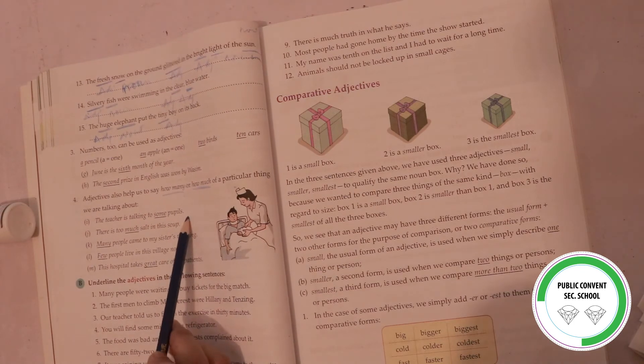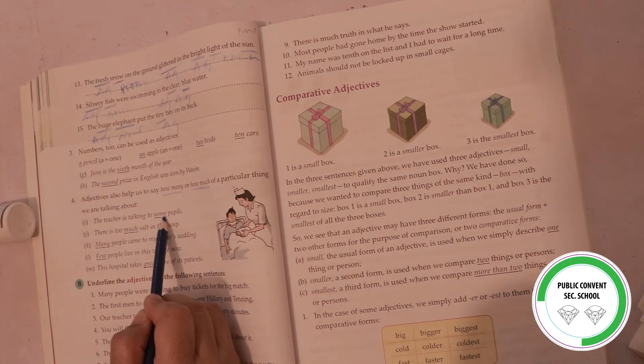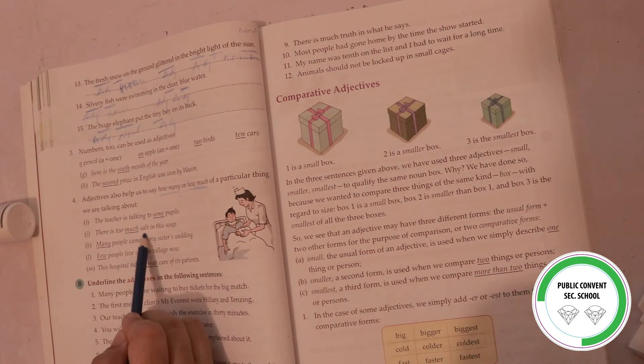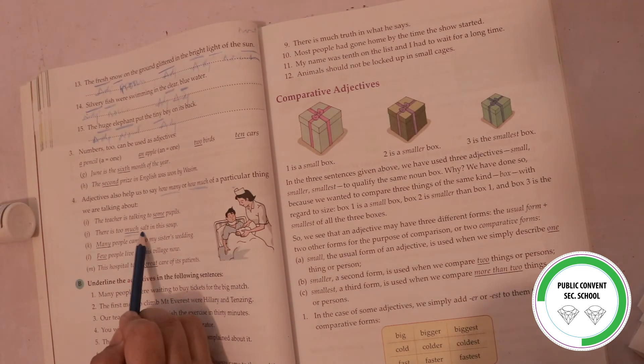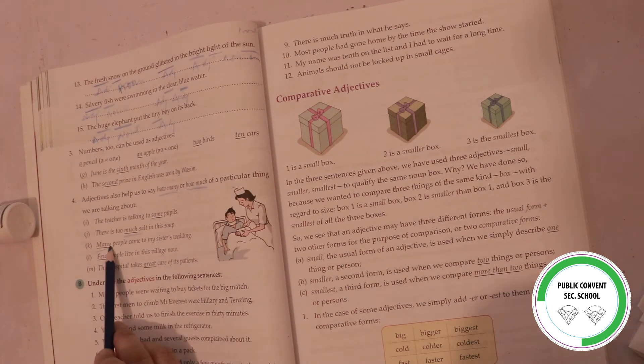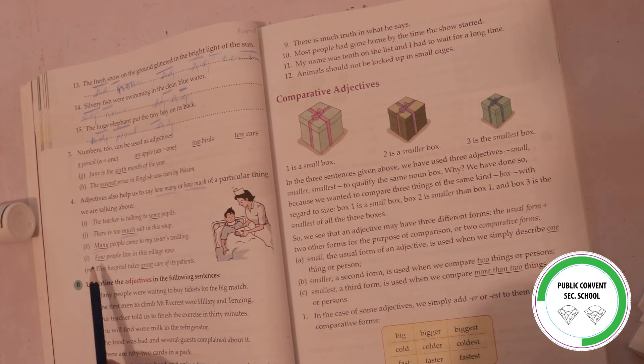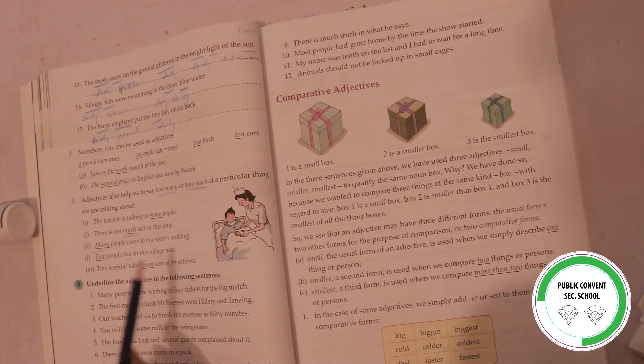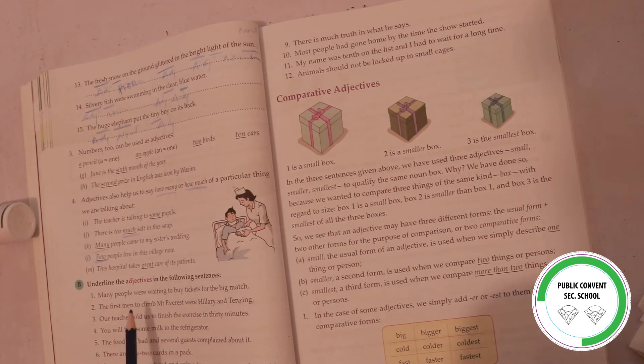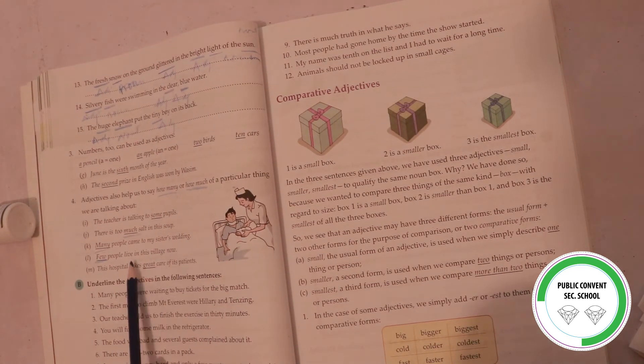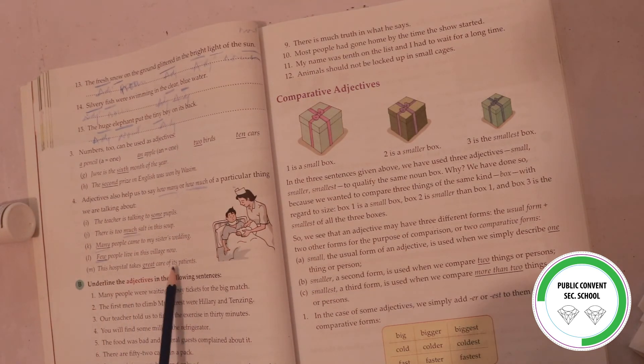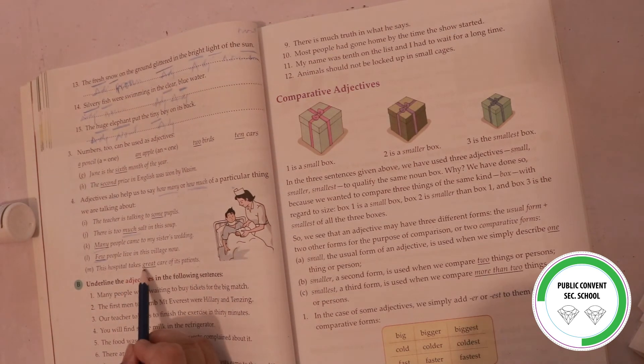The teacher is talking to some pupils - some is adjective. There is too much salt in this soup - much is adjective. Many people came to my sister's wedding - many is adjective. Few people live in this village now - few means a small number of people. This hospital takes great care of its patients - great is the adjective.